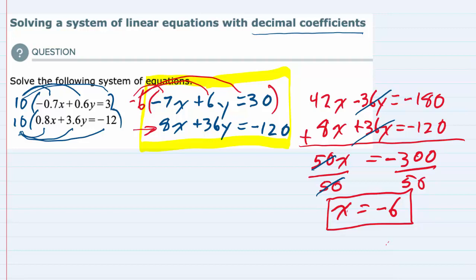I'm just going to replace this x value with the x value that we just found, x is -6. And when I do that I will have -7 times x, which we just said is -6, bringing down the rest of these terms, plus 6y equals 30.